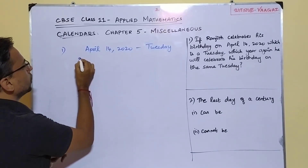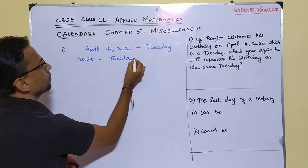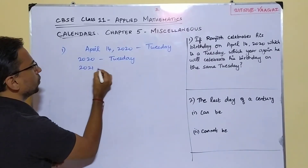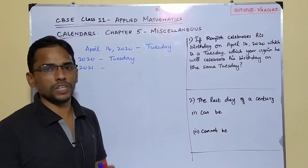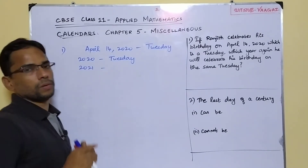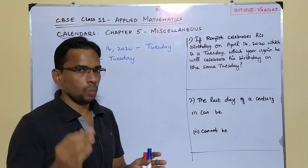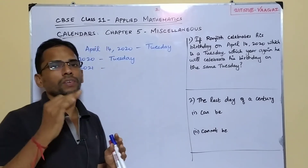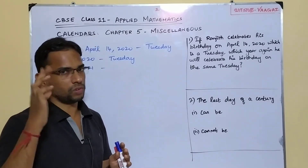In the year 2020, his birthday was on a Tuesday. Now shall we go one year ahead? We will check what happens in 2021. When we travel from 2020's April to 2021's April, we must carefully verify whether we are crossing February 29 or not — that is the important thing to check.